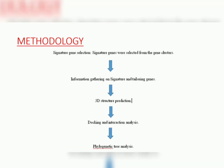The sequence information of the signature and tailoring genes were retrieved from databases. The three-dimensional structures of these proteins were predicted using bioinformatic tools, and the interactions between these structures were ascertained using molecular docking techniques. The dendrogram generated for each signature gene product displayed the evolutionary relationship it had with similar proteins from other species.